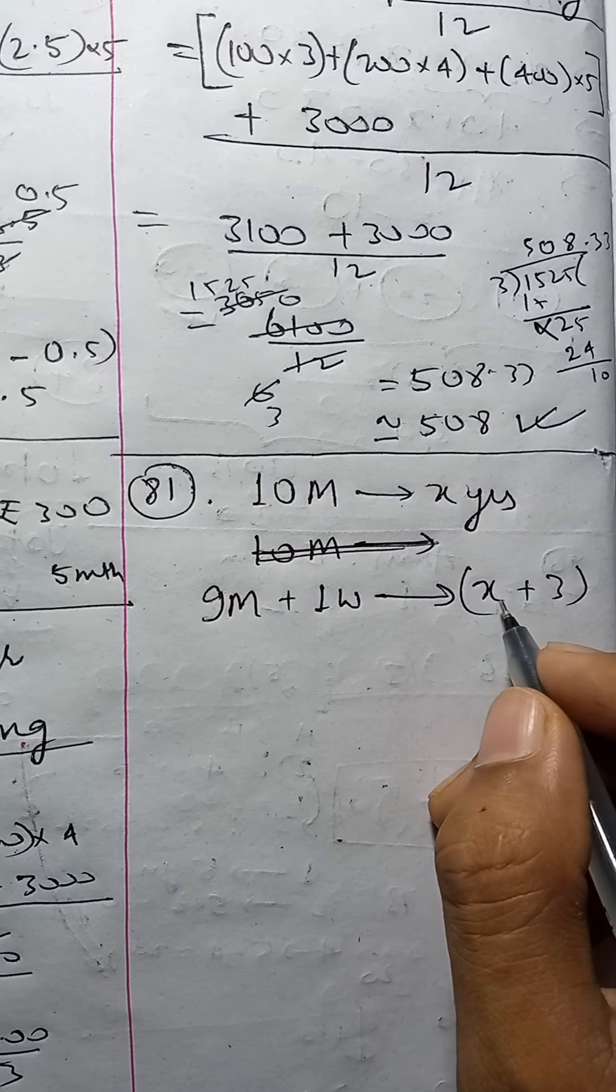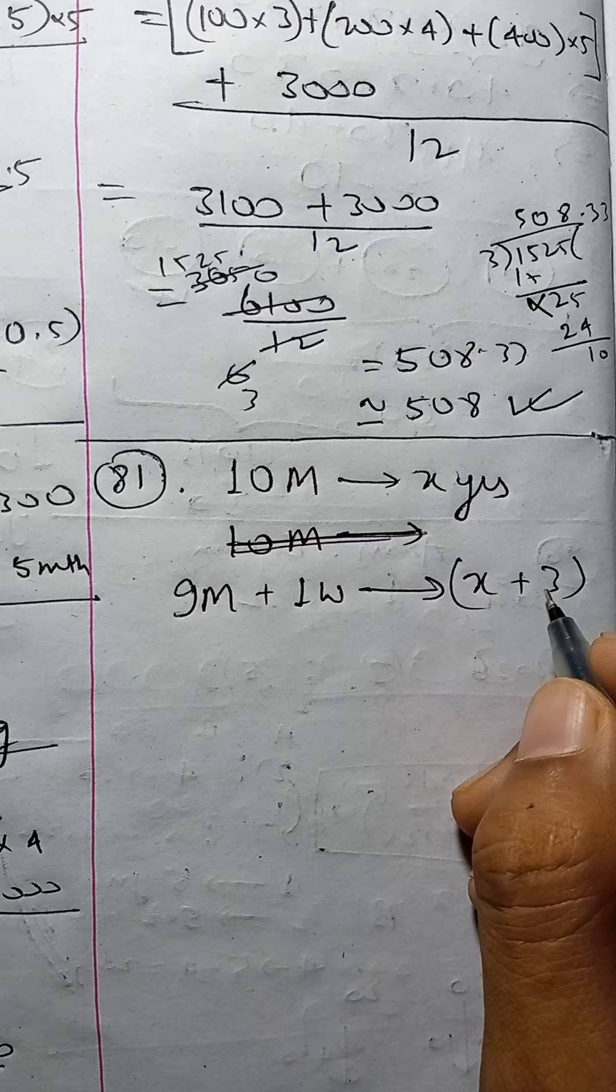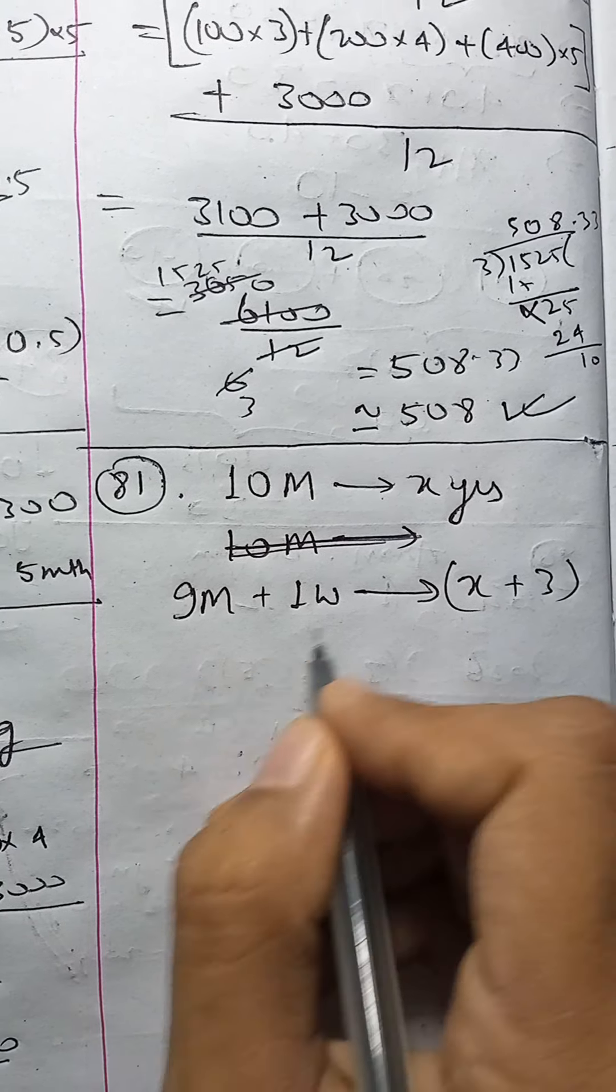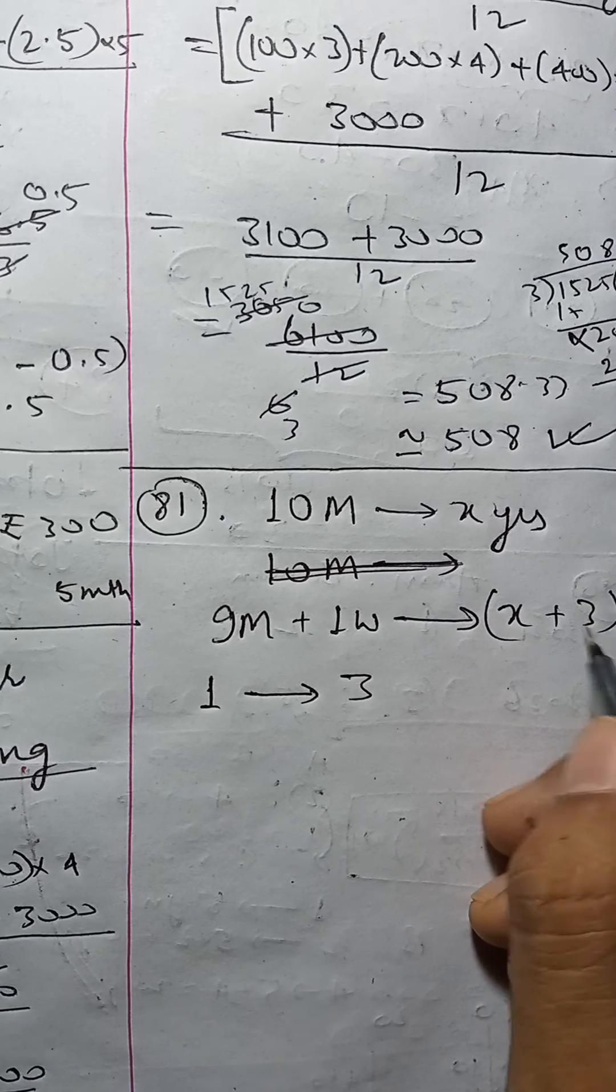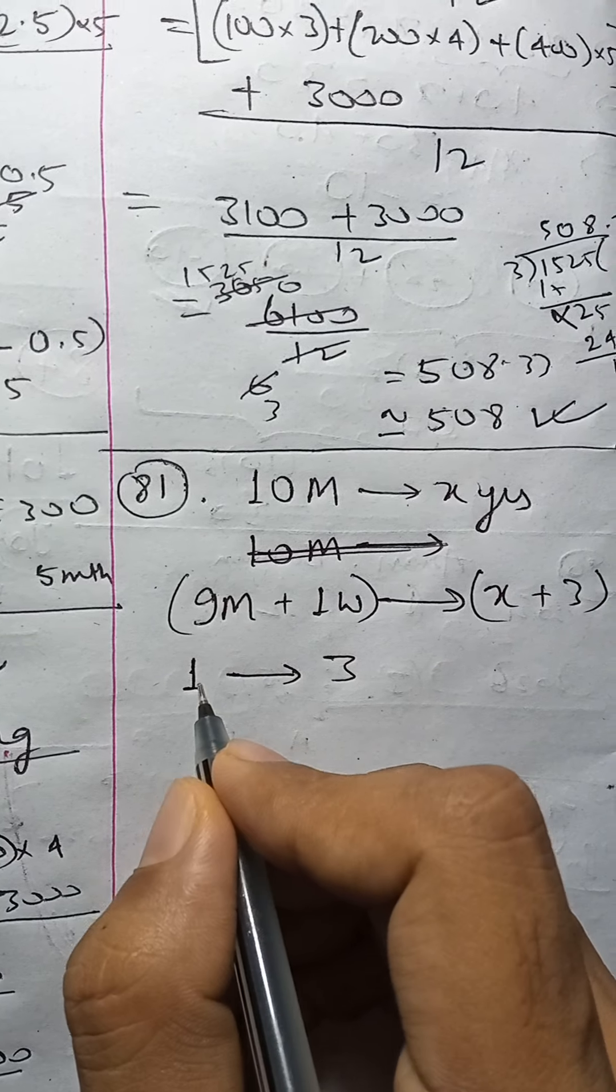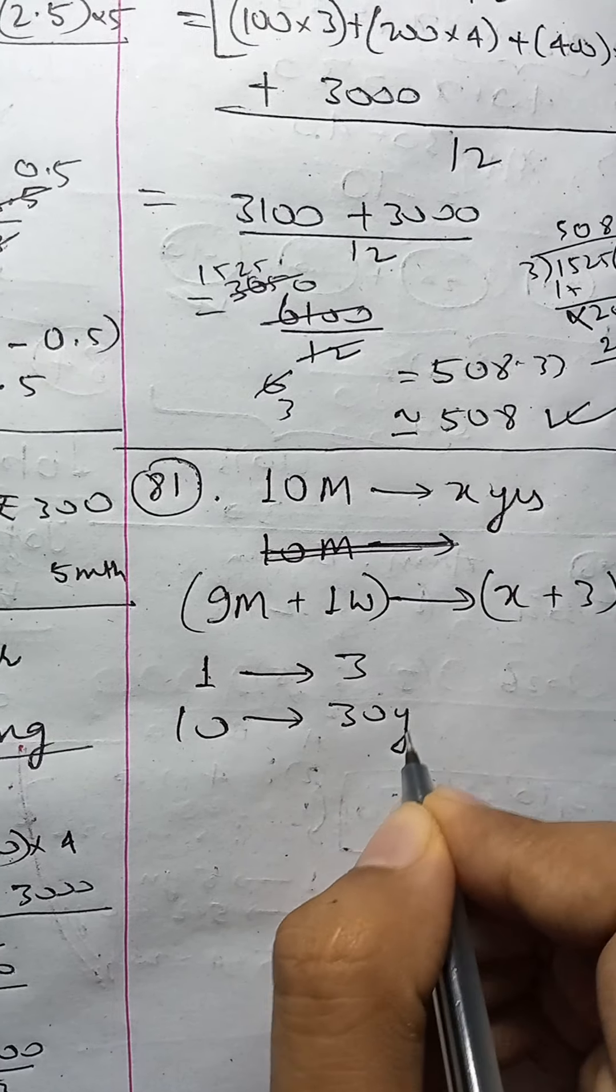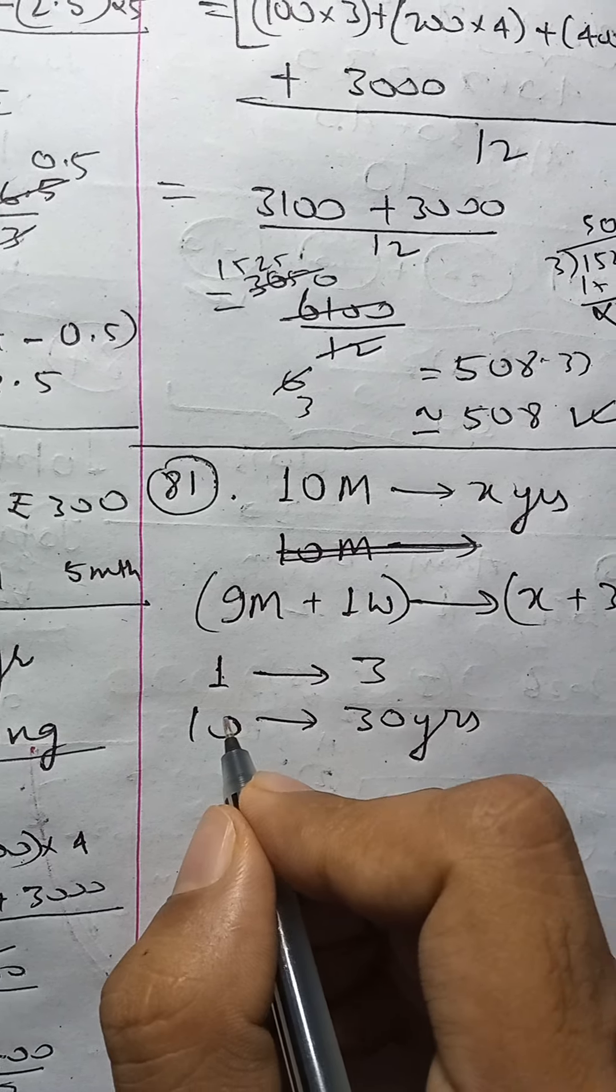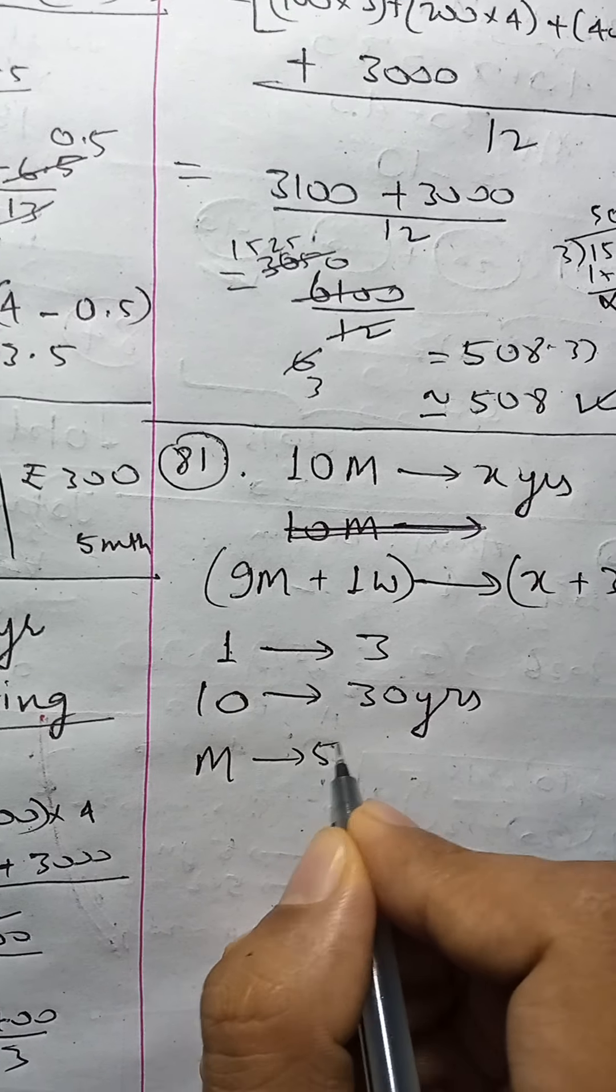Plus one woman, it becomes x plus 3. That means if one person increases the average by 3, then for 10 people it's 30 years total increase. Now the person who is leaving is 54 years.